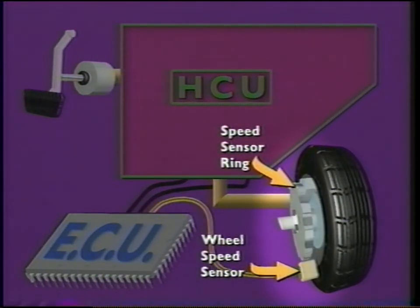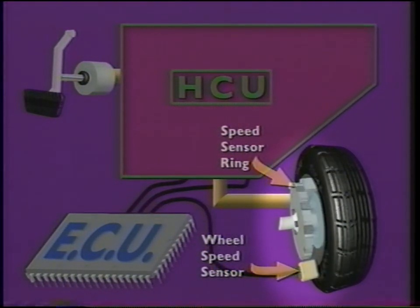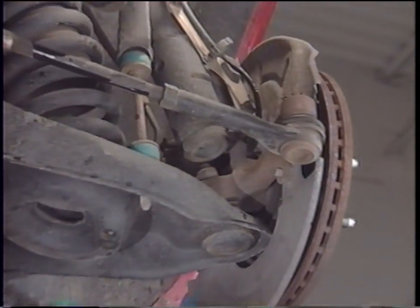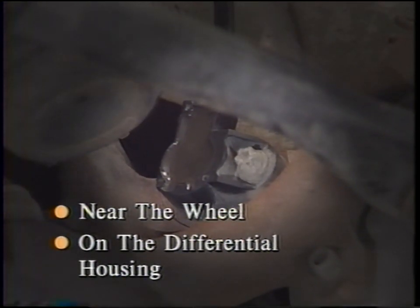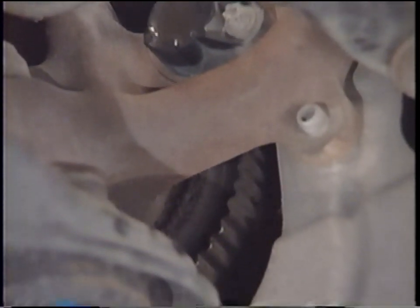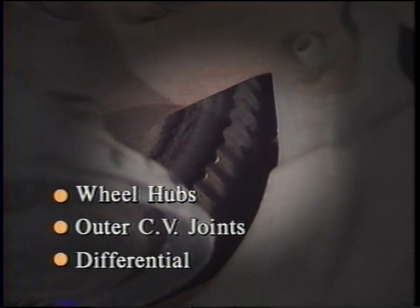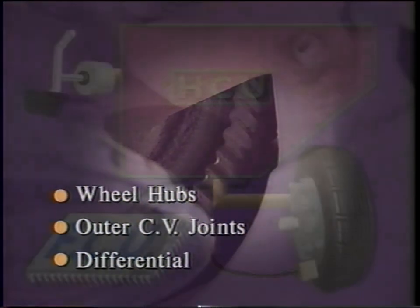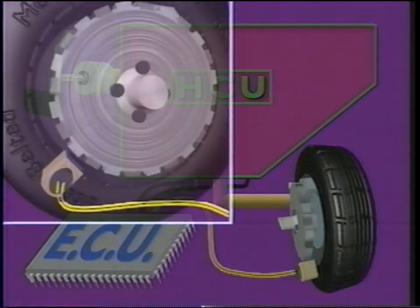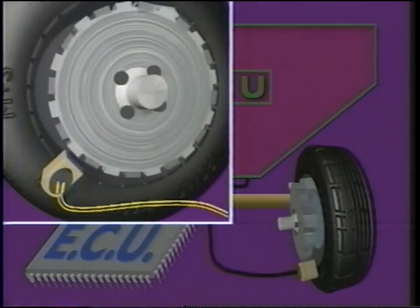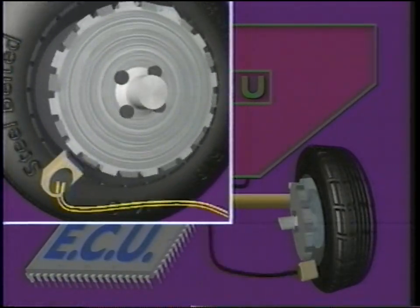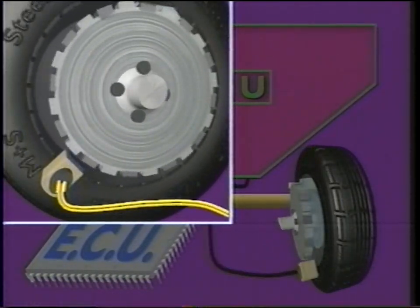Now let's look at the wheel speed sensors and speed sensor rings. The wheel speed sensors are fixed to a location either near the wheel or on the differential housing. The wheel speed sensor rings can be attached to the wheel hubs, the outer CV joints, or on the differential next to the differential ring gear. The wheel speed sensor generates an AC signal as the teeth of the speed sensor ring rotate past it. The ECU uses the signal to calculate wheel rotation speed.